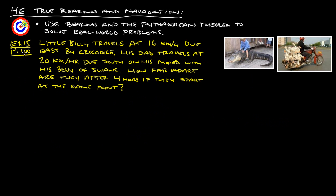This is example 15 from page 100. This one has little Billy traveling at 16 kilometers per hour due east by Crocodile. Here's little Billy and his Crocodile. His dad travels at 20 kilometers per hour due south on his moped with his bevy of swans. There's dad. How far apart are they after four hours if they start at the same point?